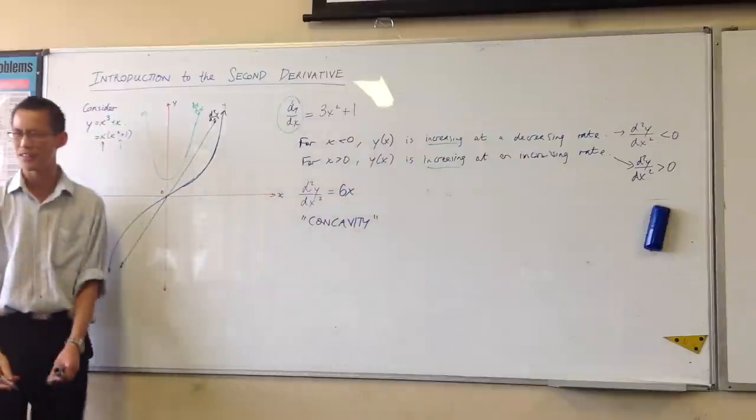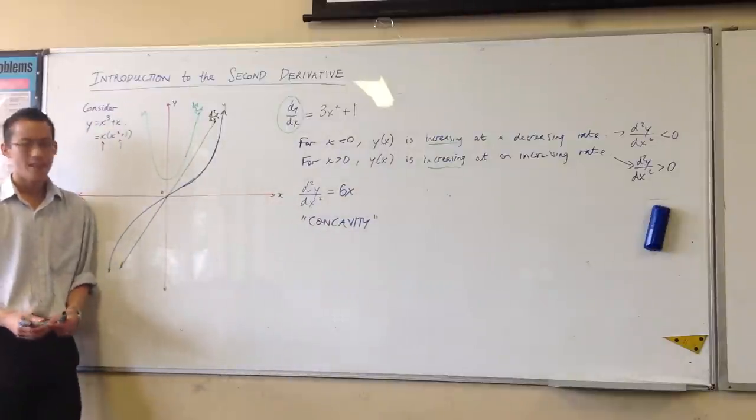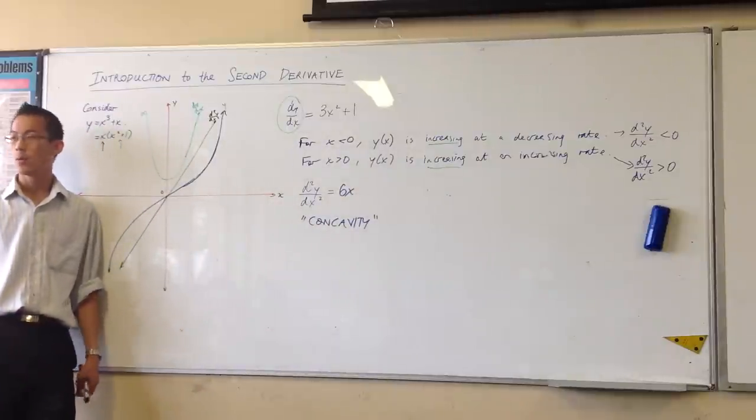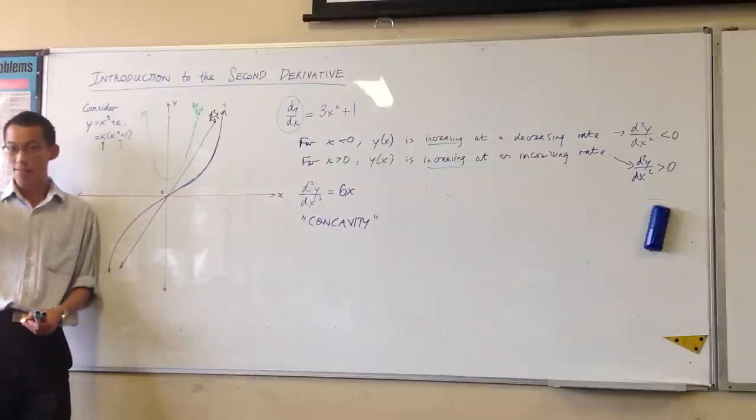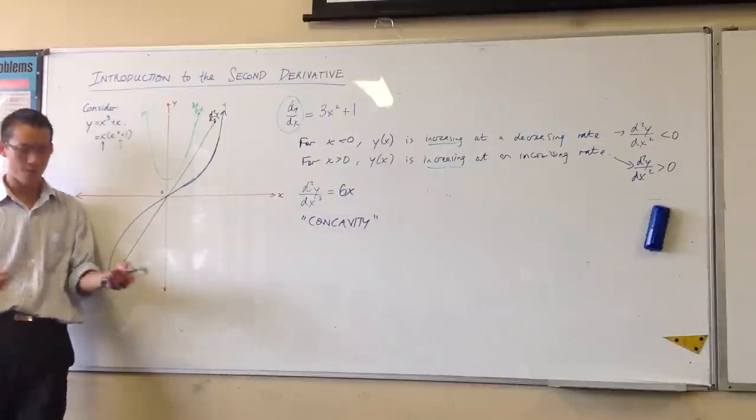Concavity. Important word. What does it mean? When we talk about lenses, we usually say they're concave or they're convex. Concave or convex.